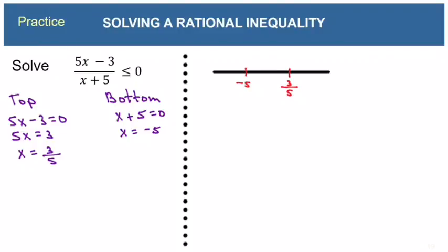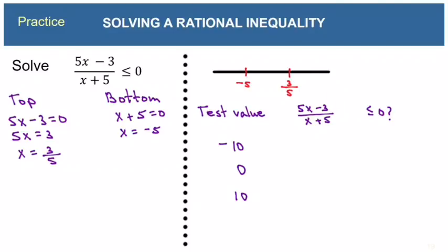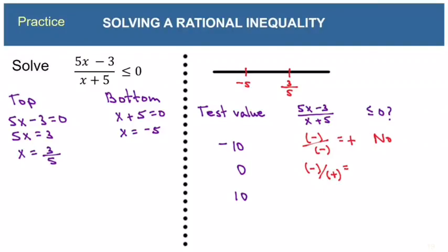Put those on the number line. Just like with quadratic inequalities, we're going to test a value from each interval. Something less than negative 5: I choose negative 10. Something in the middle interval: I choose zero. Something bigger than three-fifths: I choose 10. Plugging in negative 10: the top is negative, the bottom is negative, negative divided by negative is positive. Is that less than zero? No. Plugging in zero: the top is negative, the bottom is positive, negative divided by positive is negative. Is that less than zero? Yes. Plugging in 10: the top is positive, the bottom is positive. Is that less than zero? No. So the middle interval is the only part of our solution.